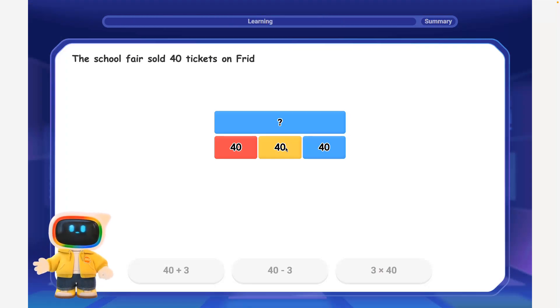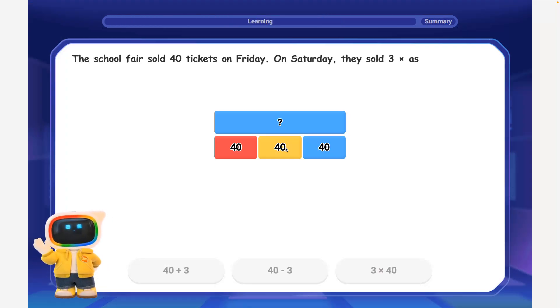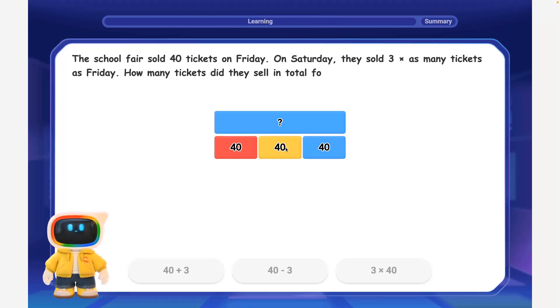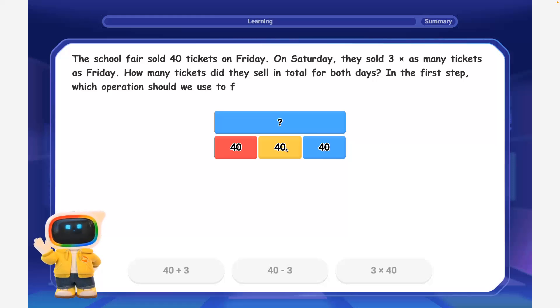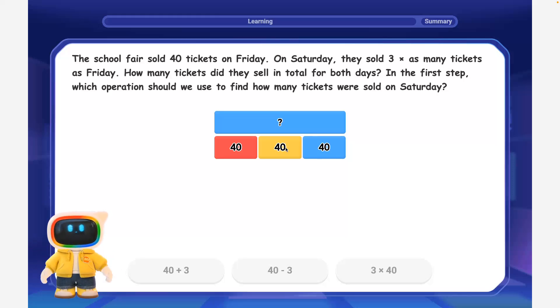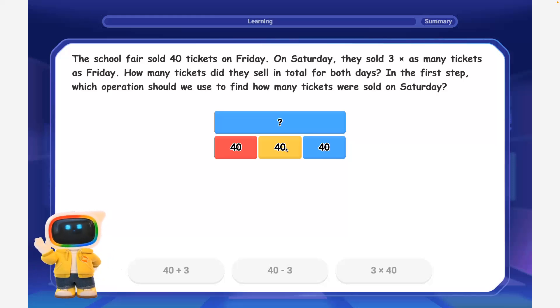The school fair sold 40 tickets on Friday. On Saturday, they sold three times as many tickets as Friday. How many tickets did they sell in total for both days?